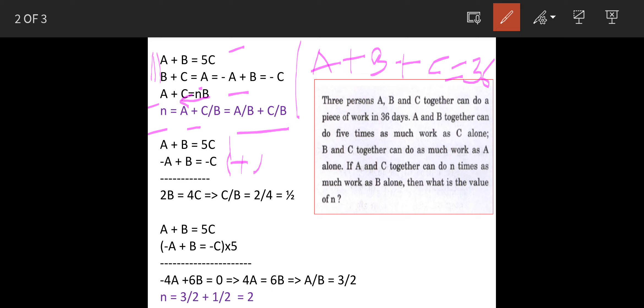So when we add these equations, A and A are cancelled. So the left hand side becomes 2B, and 5C minus C becomes 4C. So with this we get C upon B is equal to 2 by 4 or 1 by 2.